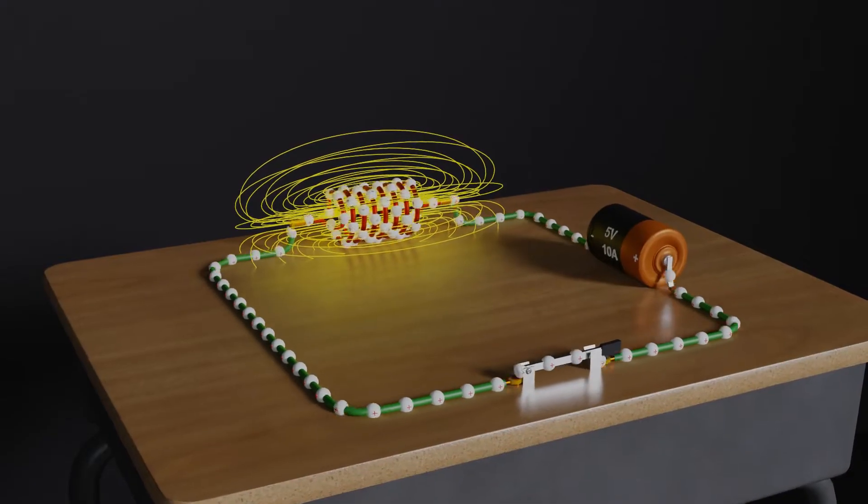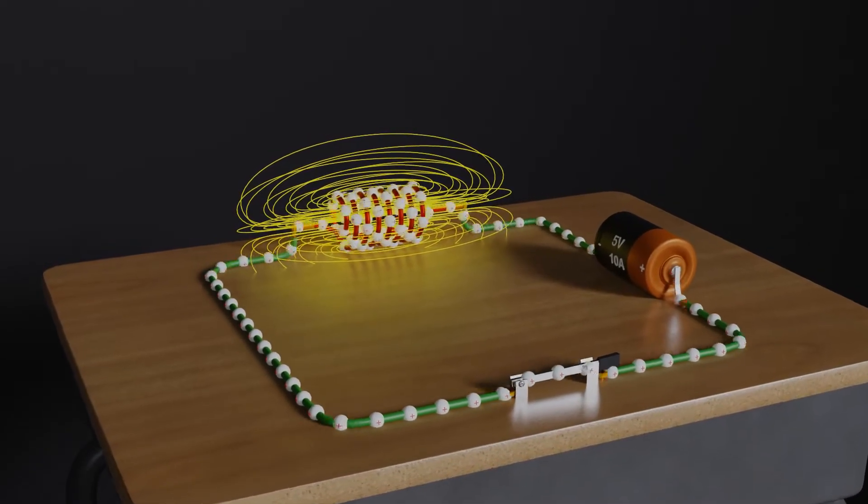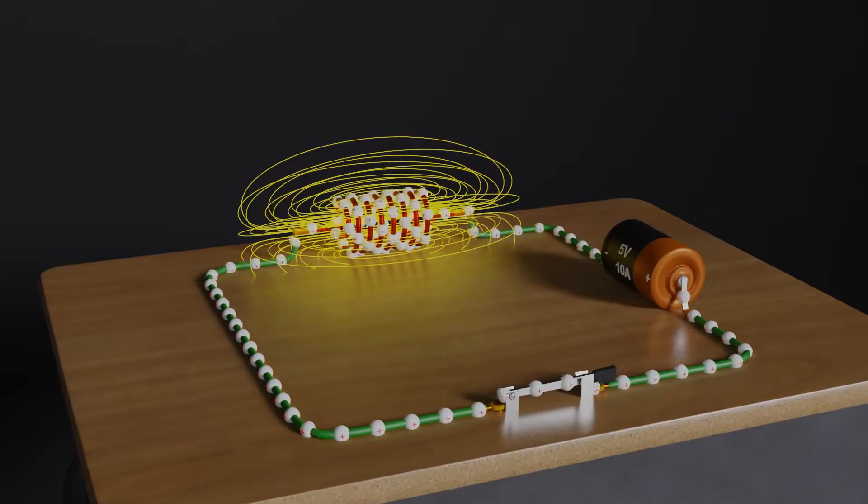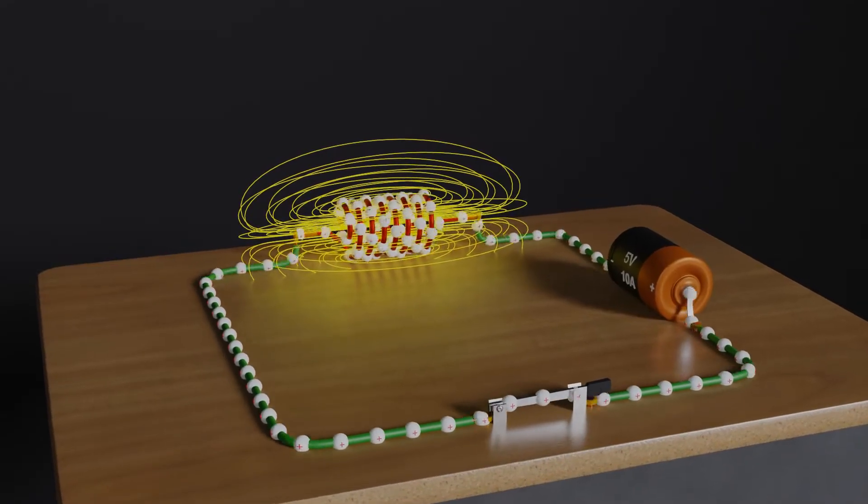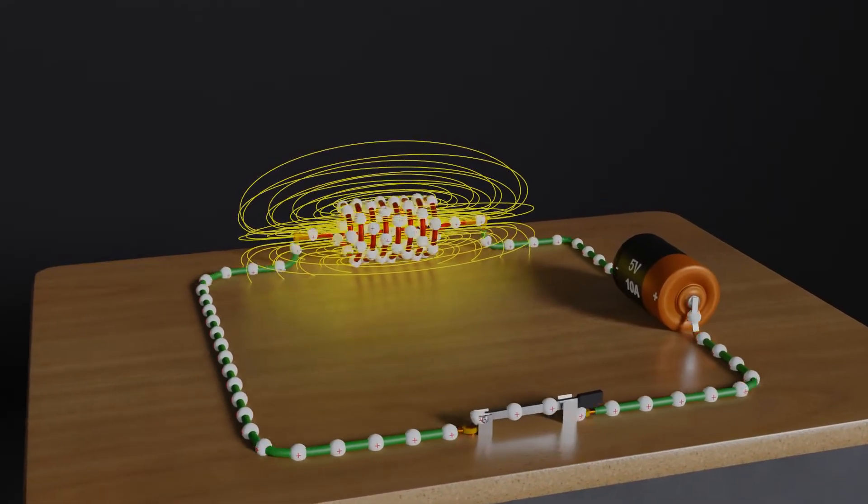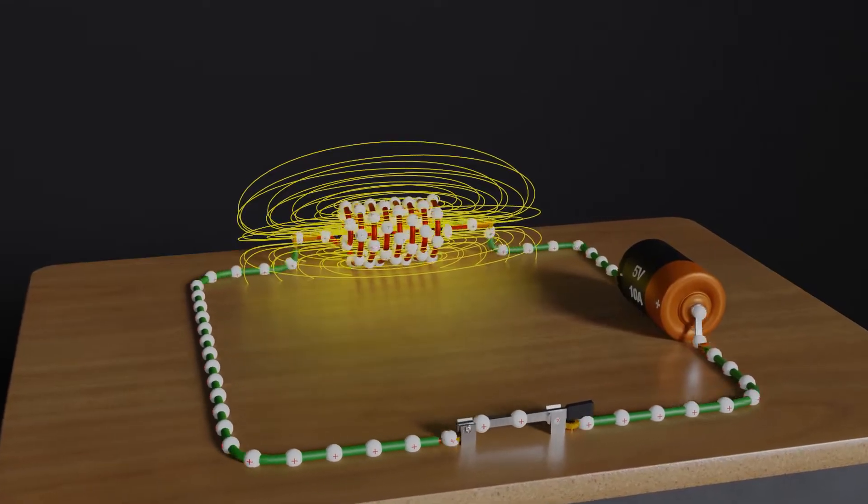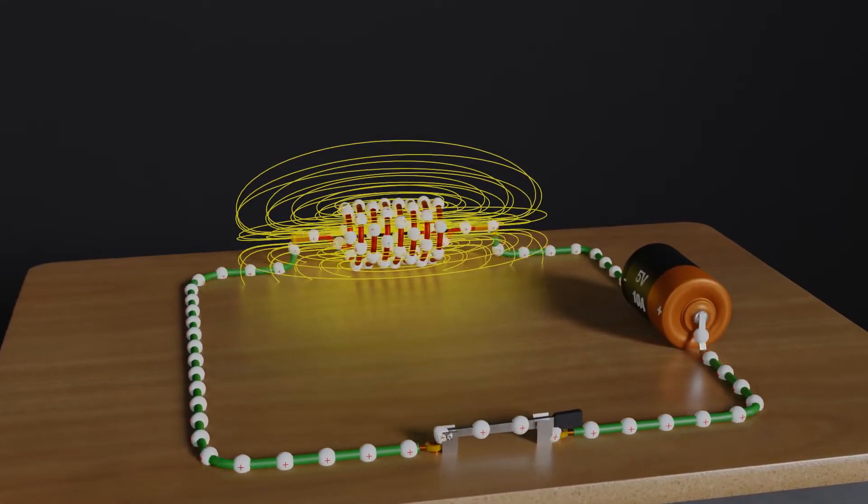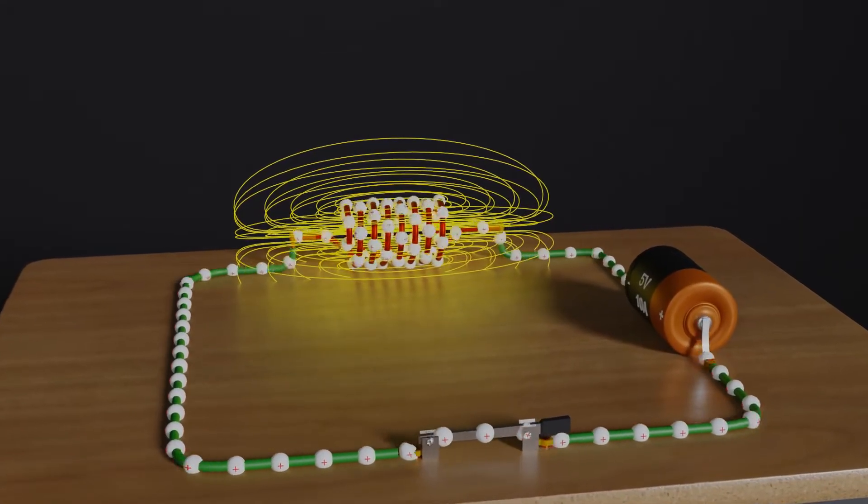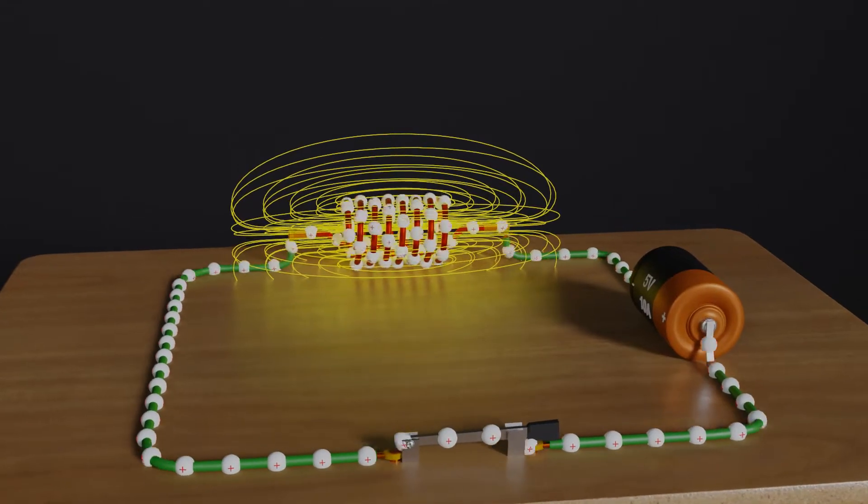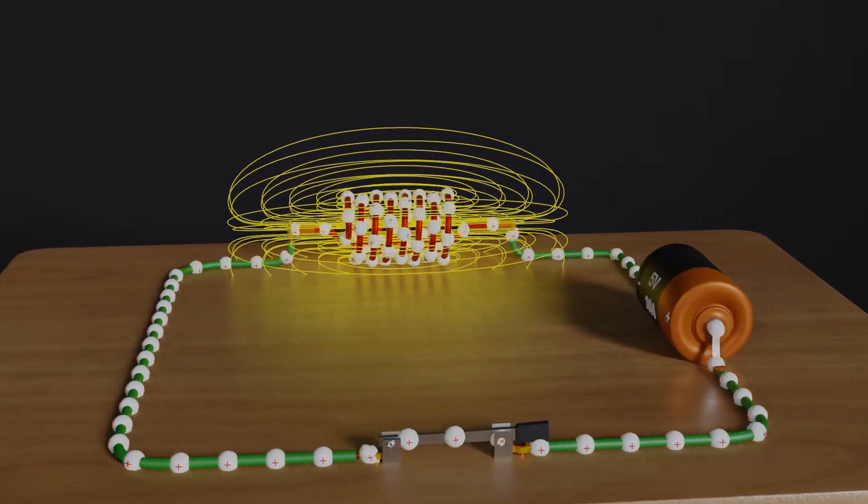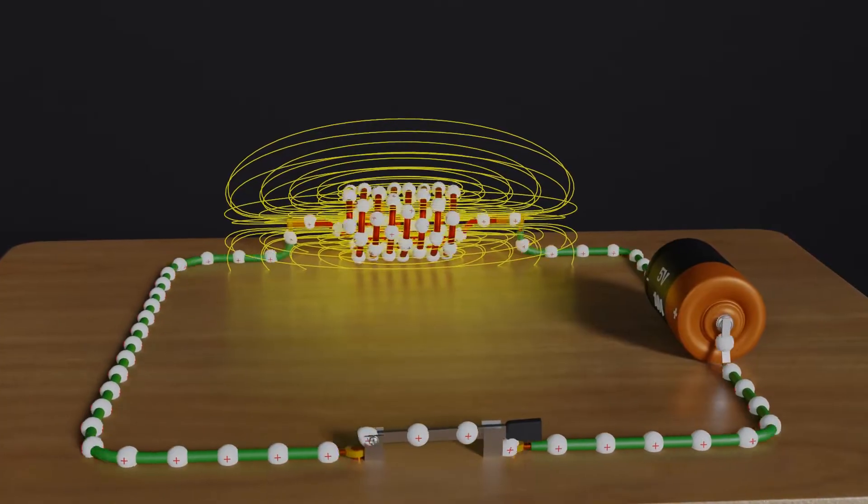It means when we switch on and close the circuit, the battery will also take some time to flow current as per the capability of its EMF. The battery will take some time to reach its highest possible electric current value. This time could be significantly less, but there will be some time.